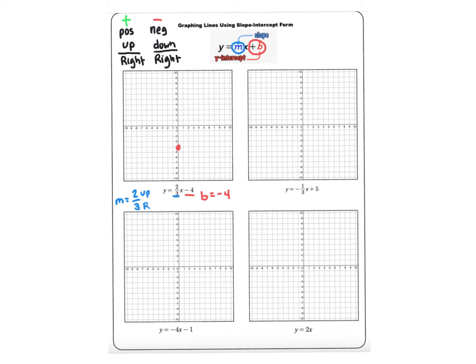So up two, right three, and then we do it again. We graph the y-intercept and then two other points. So I go up two and right three again, and now I draw my line through those points. Notice that I don't need an exhaustive table of values — just three points using the starting position and the slope to graph the line.